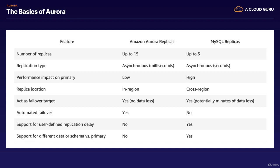Comparing Amazon Aurora replicas to MySQL replicas: you can have 15 Aurora replicas and five MySQL replicas. Both do asynchronous replication, but Aurora read replicas do this in milliseconds, where MySQL does it in seconds. The performance impact on the primary is much lower with Aurora — if you have an Aurora read replica behind an Aurora database, it doesn't really affect performance much at all, whereas MySQL is going to have a much higher performance impact. The replica location for Amazon Aurora replicas is still in-region, whereas MySQL read replicas can be cross-region.